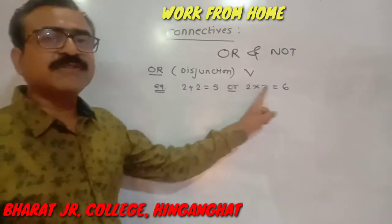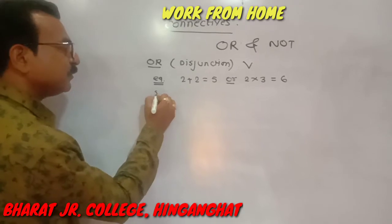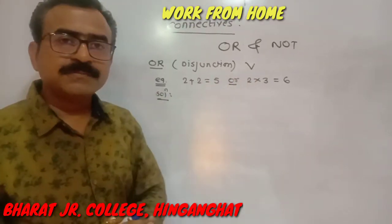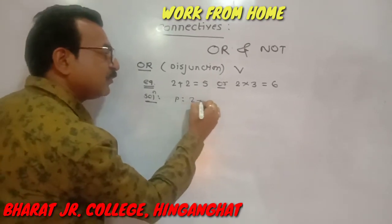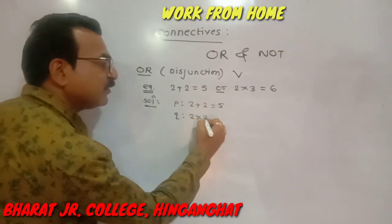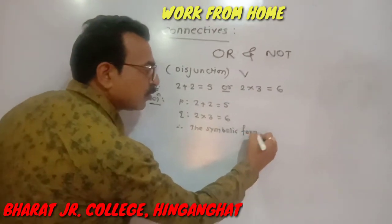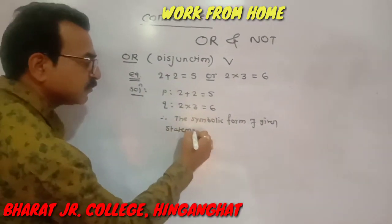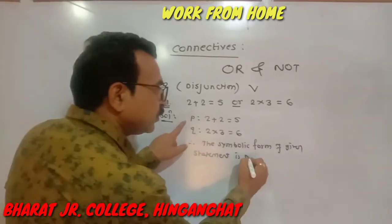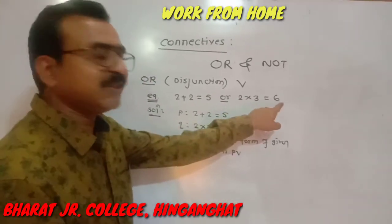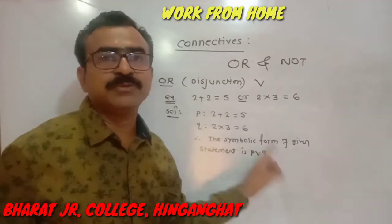Suppose you are given this example and your question is: write the given statement in symbolic form and find its truth value. In the given statement, two statements are there. Write the first statement as p and the second statement as q. The first statement is '2 + 2 = 5' and the second statement is '2 × 3 = 6.' Therefore, the symbolic form of the given statement is p ∨ q.